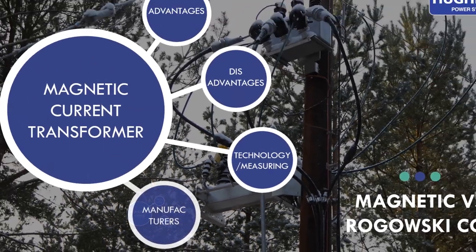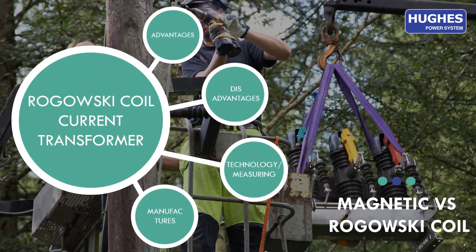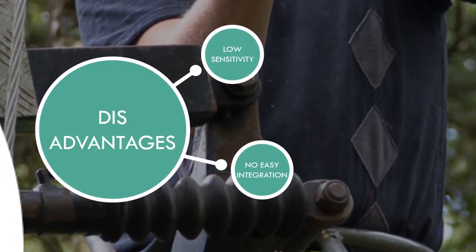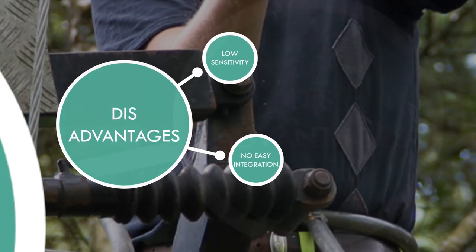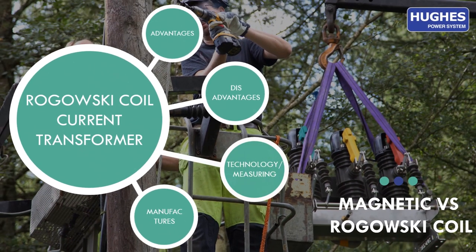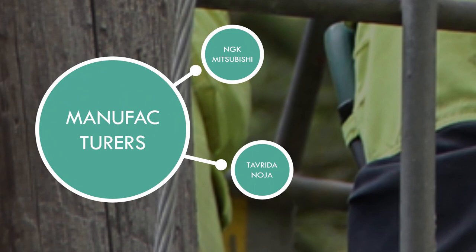Now we will have a look at the parameters of Rogowski coil current transformer. The strong sides are that it is linear over a wide range and it is cheap. The weak sides are that it has low sensitivity because it measures 1,000 ampere in millivolt and it has poor compatibility with different types of protection relay. The technology behind Rogowski coil is an air-winded coil without a magnetic core and measuring is thousands of ampere in millivolt. The manufacturers that produce reclosers with Rogowski coil are NGK, Mitsubishi, Noja Power, and Tavrida.